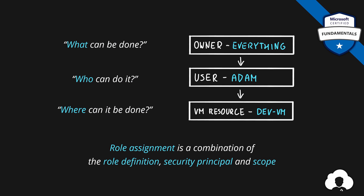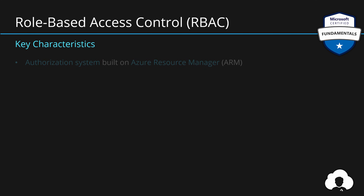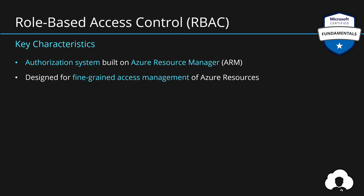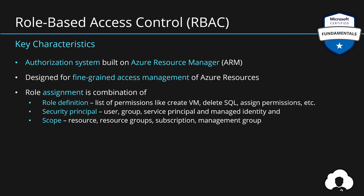Let's summarize. Role-based access control in Azure is an authorization system built on top of Azure Resource Manager, which allows you to manage access to your Azure resources with very high granularity. A role assignment is a combination of three things: a role definition, which is a list of permissions and actions you can take; a security principle, which is a user, group, or application; and a scope — where we assign those permissions, whether that's a resource, resource group, subscription, or management group.